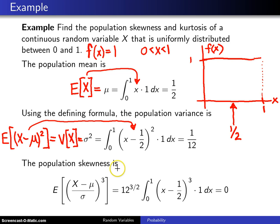Now the next thing to calculate is the population skewness. To get the population skewness, you can see from its definition that we need μ, which we calculated to be 1/2, and we need σ as well, and σ, the population standard deviation, will be the square root of 1/12.